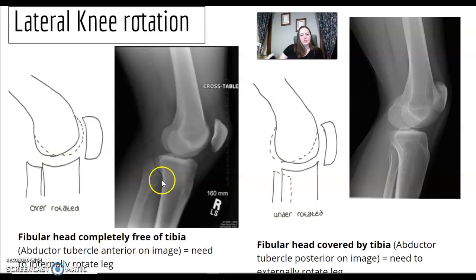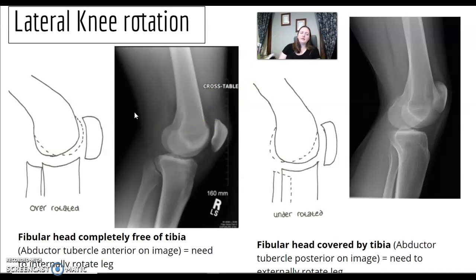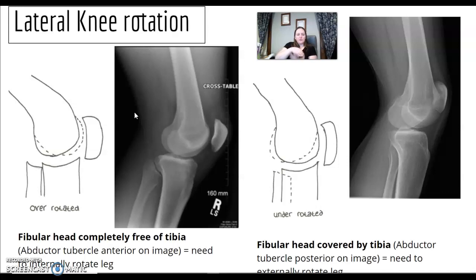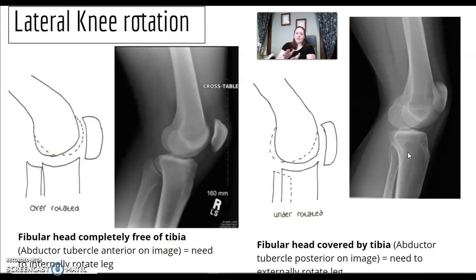If the fibula is pushed back too far, you are over-rotated. For a recumbent lateral knee, the unaffected leg is up and forward. If the fibula is pushed too far back, the patella is rotated toward the table — rock the hips back to correct. If the fibula is hiding under the tibia, that's under-rotation — the knee is away from the table, so rock the hips toward the table.